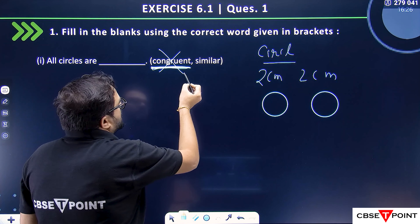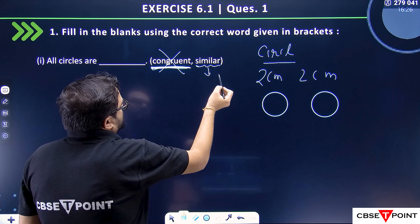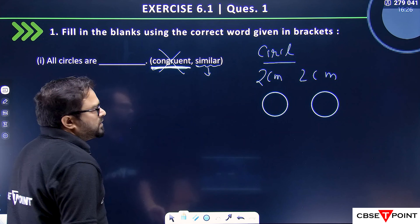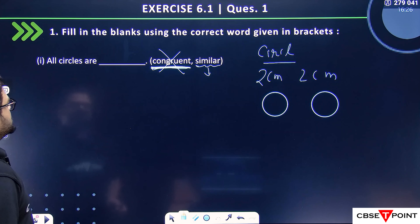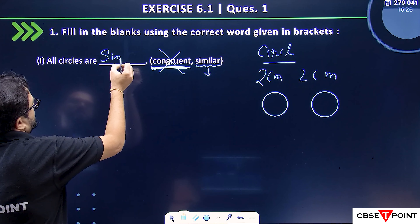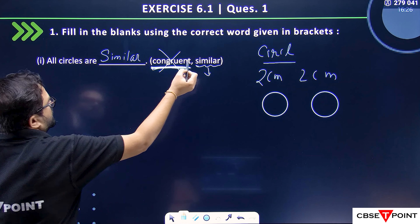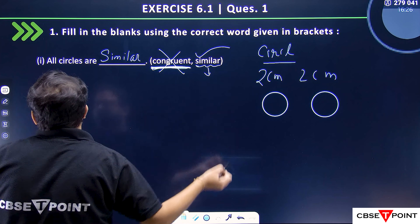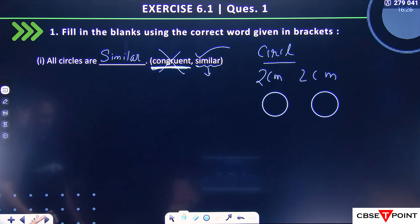So what will all circles be — congruent or similar? The shape will be the same but the size will be different, so they will be similar. Definitely, students, I hope that is very clear to you. Now let's see the next part.